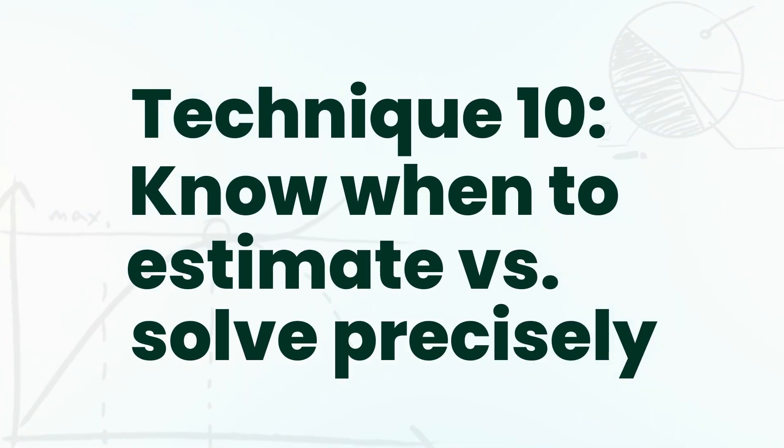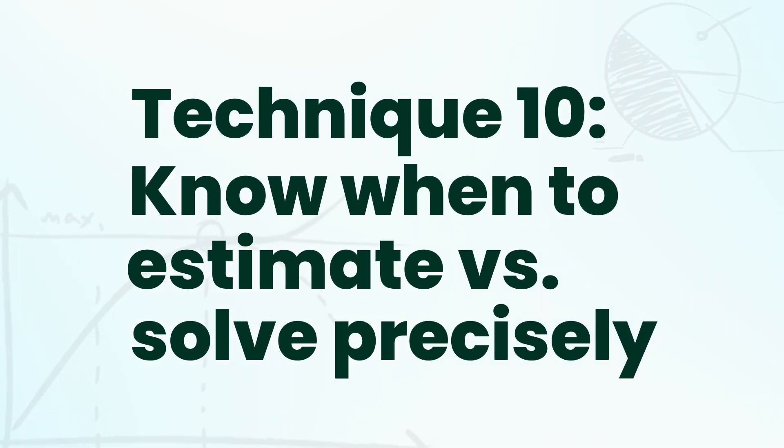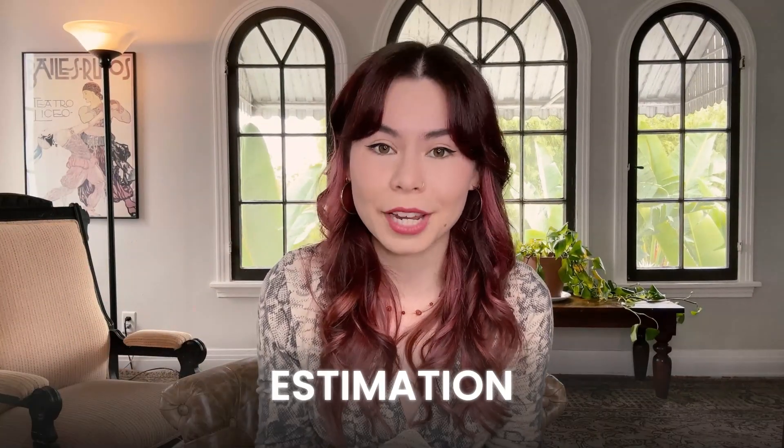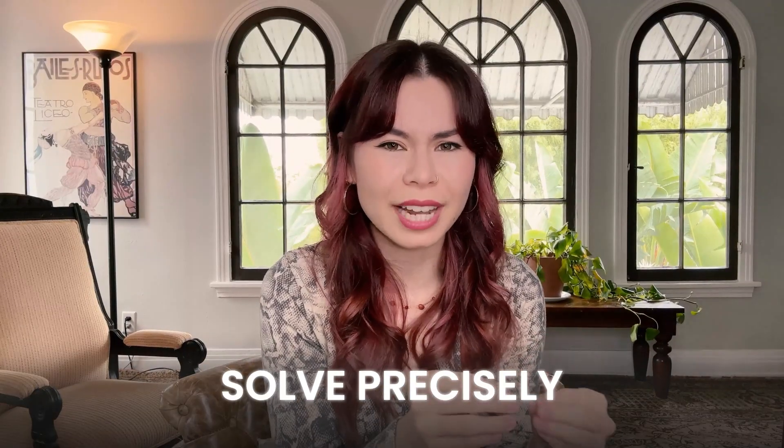Technique number ten: know when to estimate versus solve precisely. When answer choices are really spread out — for example, 10, 50, 90, 130 — use estimation. But when answer choices are closer together — for example, 61, 62, 65, 67 — solve precisely to make sure you get the exact answer.